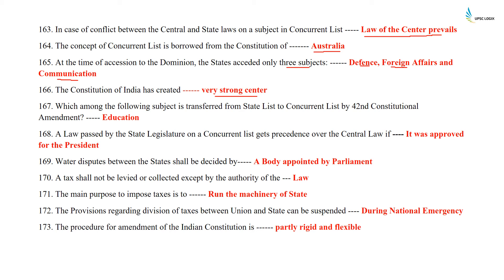Which subject was transferred from the State List to the Concurrent List by the 42nd Constitutional Amendment Act, 1976? A law passed by the state legislature on a concurrent list subject gets precedence over the central law if it was approved by the President. Water disputes between states shall be decided by a body appointed by the Parliament. A tax shall not be levied or collected except by the authority of law. The main purpose to impose taxes is to run the machinery of the state. The provision regarding division of taxes between union and state can be suspended during national emergency.